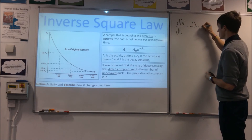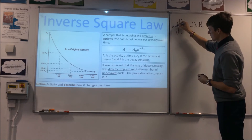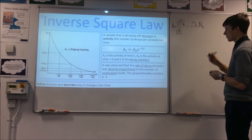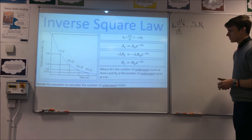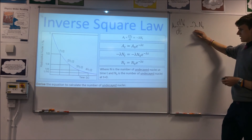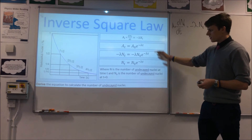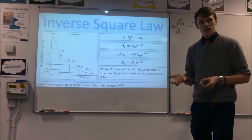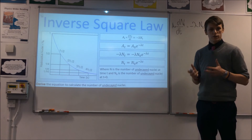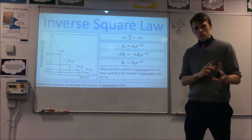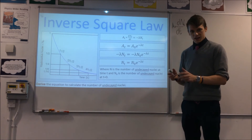Activity is directly proportional to the number of undecayed nuclei N, with the decay constant λ as the constant of proportionality: A = λN. Combining this with the experimental equation means the number of undecayed nuclei also follows an exponential relationship: N_t = N_0 · e^(−λt). So we have two different exponential relationships for decaying nuclei or decaying isotopes.